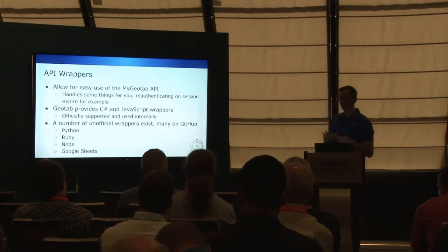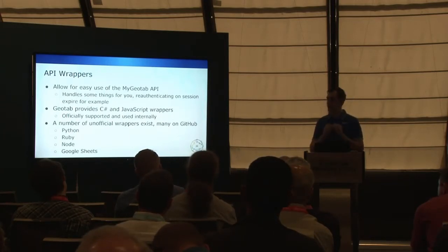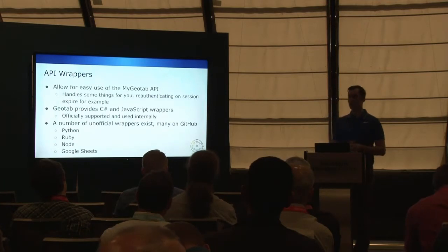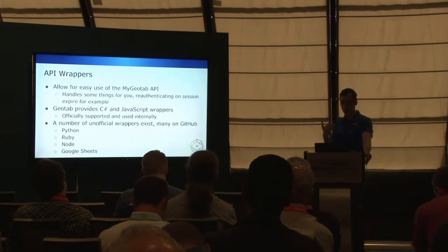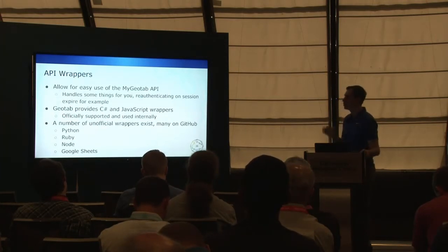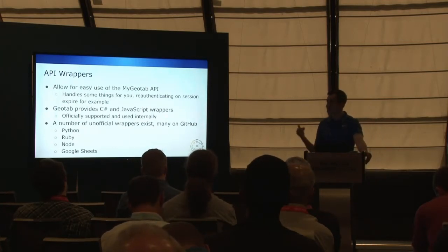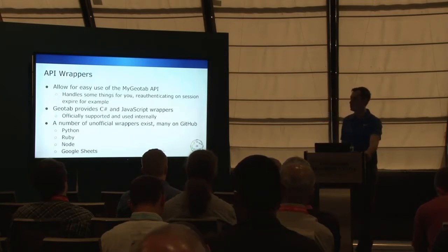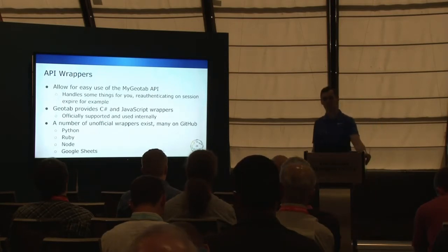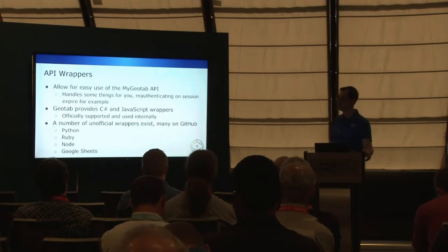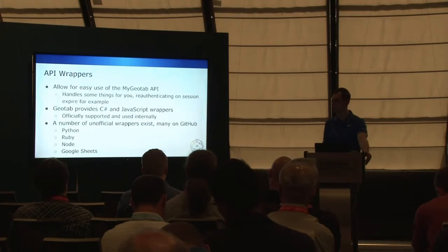The API wrappers in C# and JavaScript hide all of this from you, so if you can, I very much suggest using them. They are officially supported and we use them internally, so they're pretty well battle-tested. There are also a number of unofficial wrappers on GitHub — if you search for Geotab you'll find Python, Ruby, Node, and Google Sheets wrappers. The Python one may actually be from someone at Geotab, though I'm not 100% sure if it's officially supported yet. Most of them work pretty well from my experience.